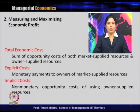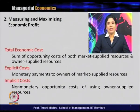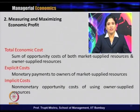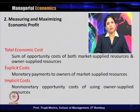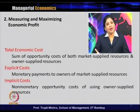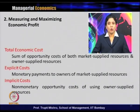The second category is implicit cost — the non-monetary opportunity cost of using owner-supplied resources. In many cases, implicit cost is not added when calculating the cost of production, because there is no direct cost — there is only an opportunity cost. Implicit cost takes care of all non-monetary opportunity costs of using owner-supplied resources. Total economic cost is the sum of the opportunity cost of both market-supplied resources and owner-supplied resources, giving us explicit cost and implicit cost.